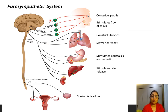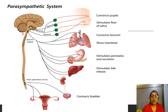Parasympathetic innervation is through the craniosacral division. The cranial part includes: the third cranial nerve (oculomotor nerve), which supplies the circular and ciliary muscles of the eye and causes constriction of the pupil; the seventh nerve (facial nerve), which supplies the lacrimal gland causing increased secretion, and also supplies the submandibular gland causing increased salivary secretion; the ninth nerve (glossopharyngeal nerve), which stimulates the submandibular gland and causes increased secretion of saliva.